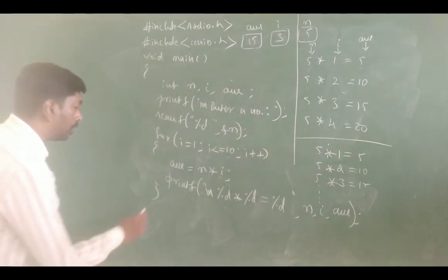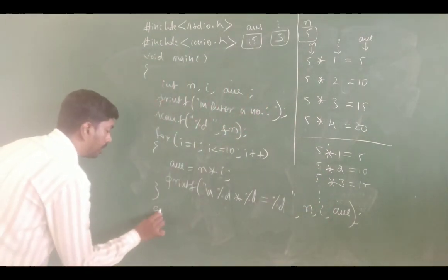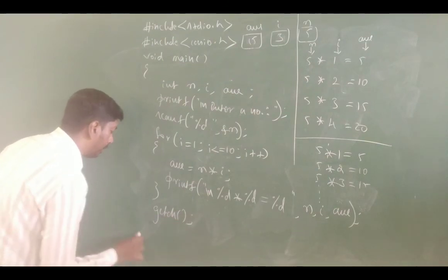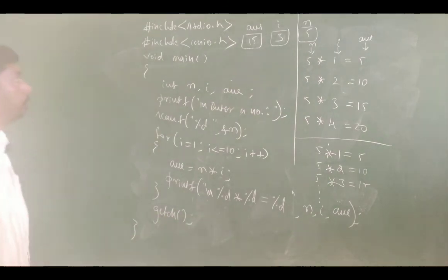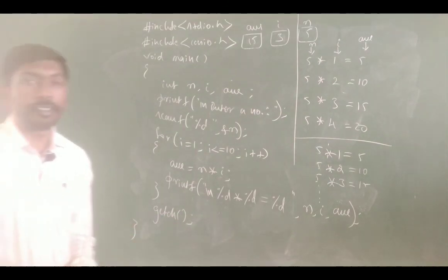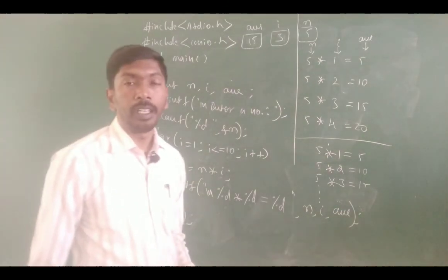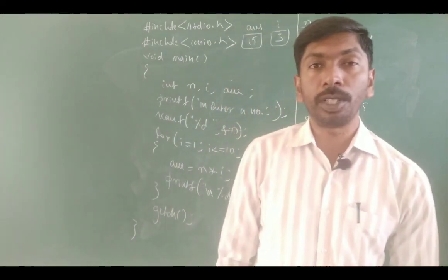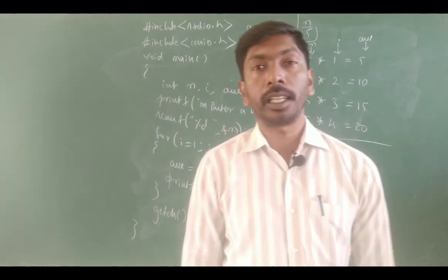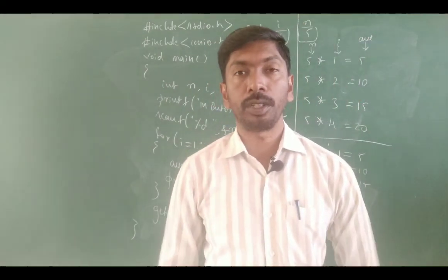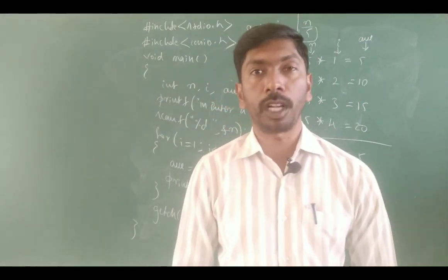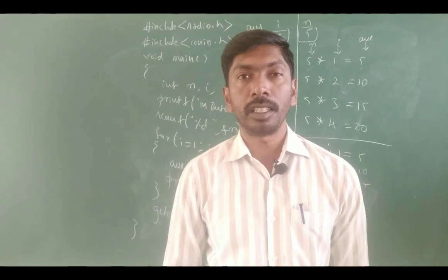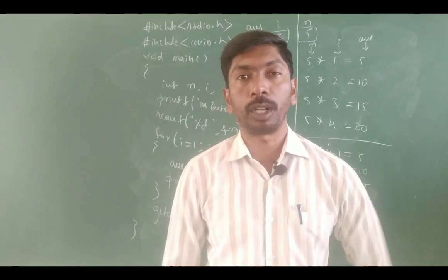After the loop completes, add getch and close the main function. This is the program to print the multiplication table for a given number using the for loop. This is all about the for loop.